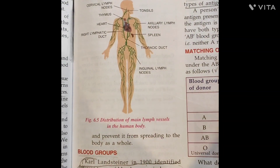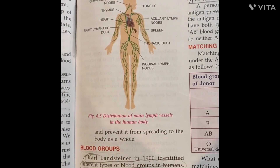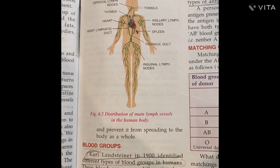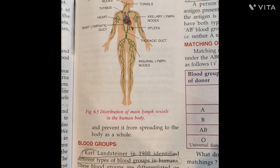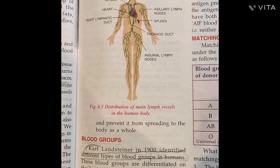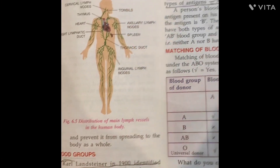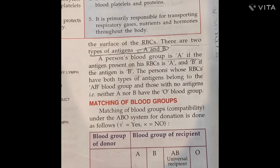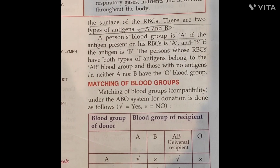Reading about blood groups. Karl Landsteiner in 1900 identified different types of blood groups in humans. Blood groups are differentiated on the basis of proteins and antigens found on the surface of red blood cells.